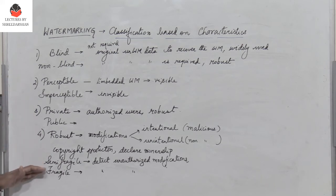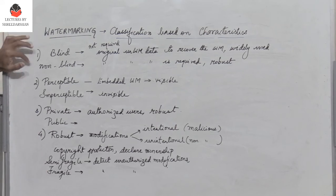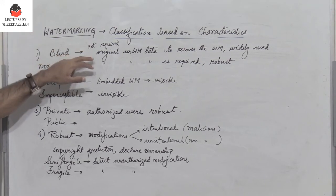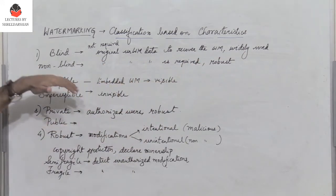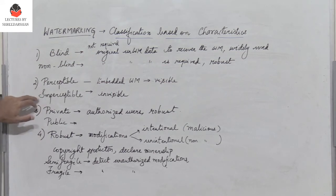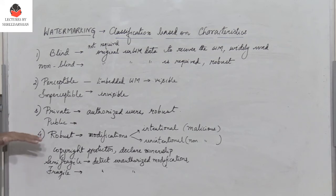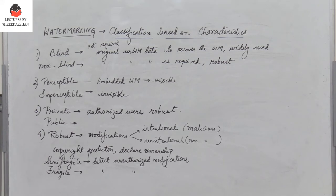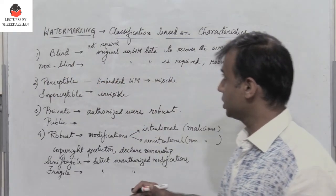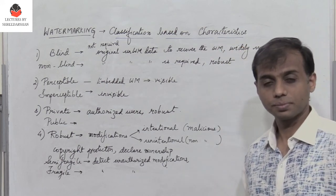To recap the classifications based on characteristics: blind watermarking does not require original unwatermarked data to recover the watermark and is most widely used, while non-blind is more robust. Perceptible watermarks are visible; imperceptible are invisible. Private watermarks can only be detected by authorized users and are more robust, while public watermarks can be identified by anyone. Robust watermarks survive modifications, while semi-fragile and fragile watermarks are used to detect unauthorized modifications — with fragile watermarks being destroyed or altered by any such modification.